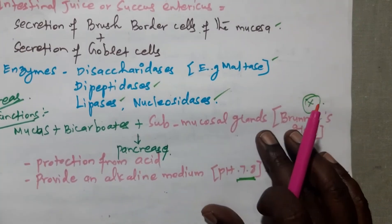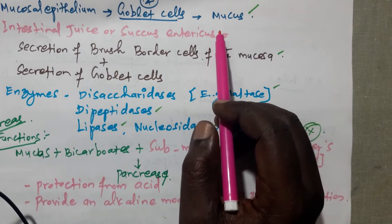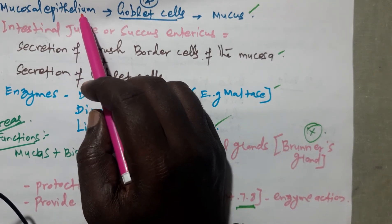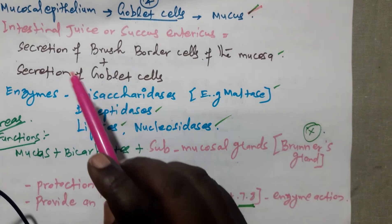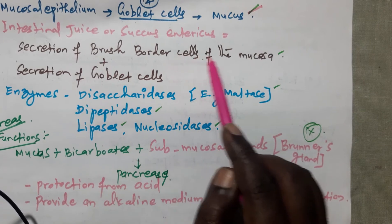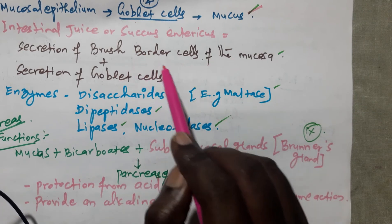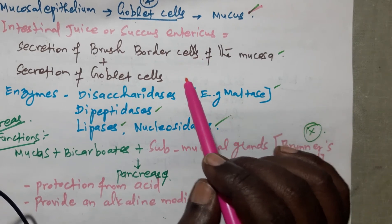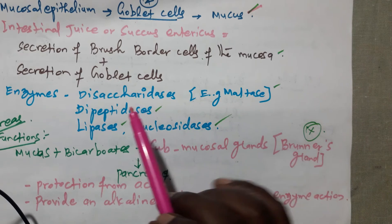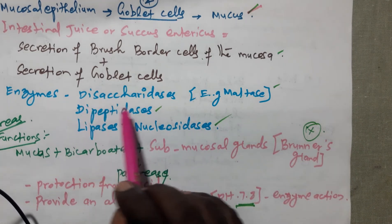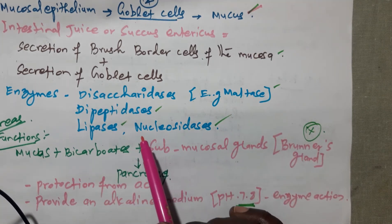The third one is intestinal juice or succus entericus. The mucous epithelium present in the small intestine consists of goblet cells, which secrete mucus. The intestinal juice or succus entericus is the secretion of brush border cells of the mucosa — microvilli present above the villi — and goblet cells. The intestinal juice consists of enzymes: disaccharidases, examples being maltase, dipeptidases, and lipases, and nucleosidases — totally four items.